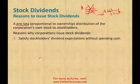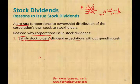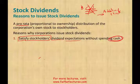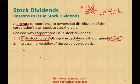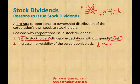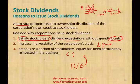Reasons why the company issues stock dividend: first, to satisfy stockholders' dividend expectation — stockholders want to receive dividends, but the company wants to preserve their cash, so they give stock dividend instead. Another reason: it increases the marketability of the corporation's stock. When you distribute new shares, the price of the stock goes down due to supply and demand, making the stock more marketable. It also emphasizes that a portion of stockholders' equity has been permanently reinvested — you take the dividend out of retained earnings and put it into common stock.